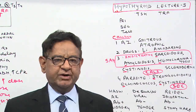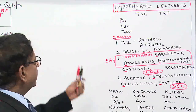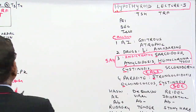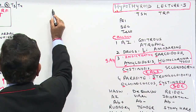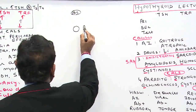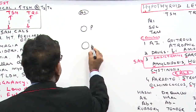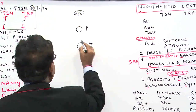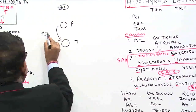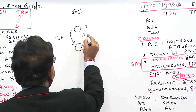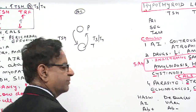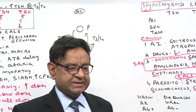Hello friends, now I will be talking to you about hypothyroid. First of all we learn some basic concepts. We have a pituitary and here is the thyroid gland. From pituitary comes TSH and from the thyroid gland T3 and T4 are secreted, and they have a negative feedback mechanism.